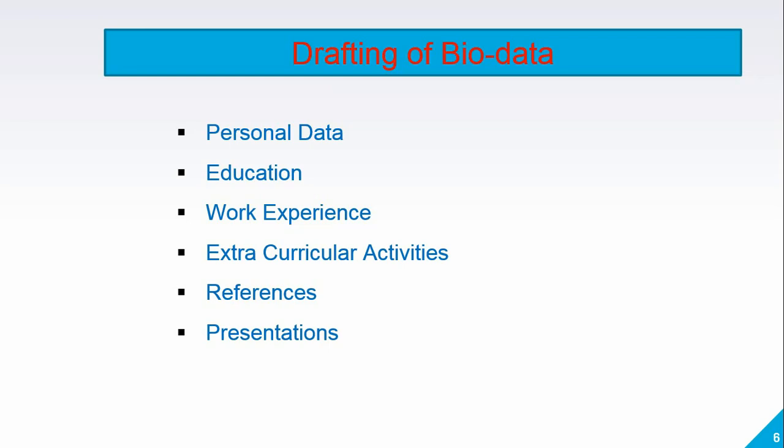If I want to write my bio data, first of all I have to write my personal data — from my name to my caste to my height, all my biological details. Then I have to write about my educational details. Then I have to write about my work experience if I have gained any. Then I have to write about my extracurricular activities which I have been a part of. Then I have to provide three references for inquiry purposes and present it in the right manner. This is how bio data is written.